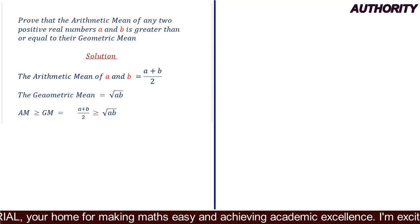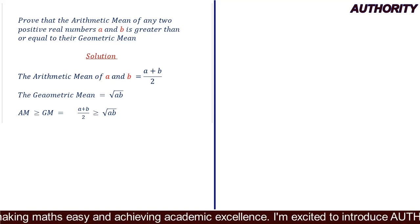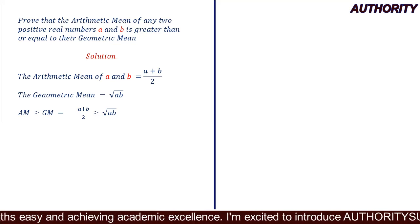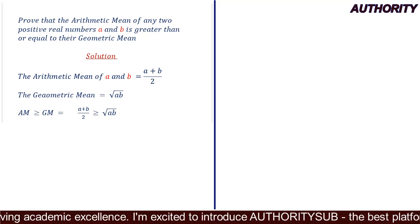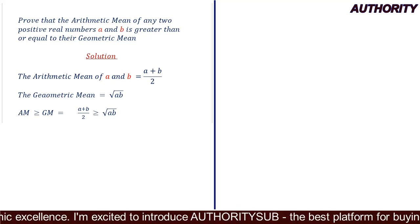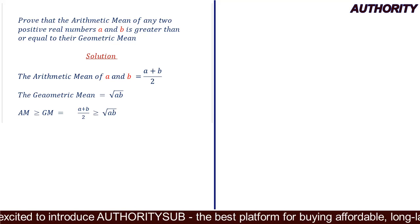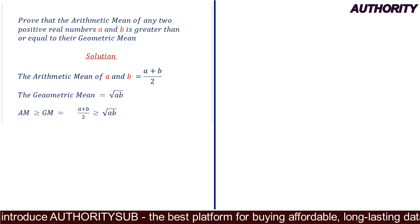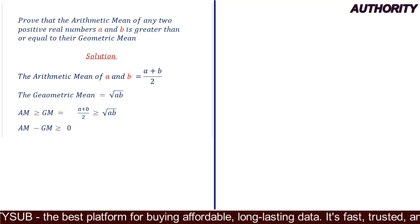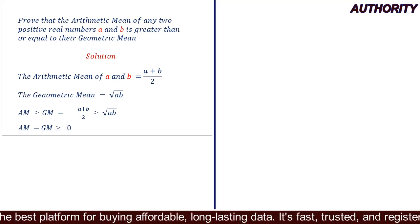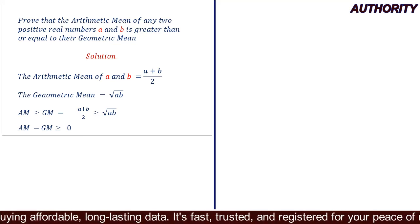We are going to show that AM minus GM is greater than or equal to zero. When you subtract the geometric mean from the arithmetic mean, something should remain and that remainder should be greater than or equal to zero — that automatically proves AM ≥ GM. Now let's prove it step by step. We have (a + b)/2 ≥ √(ab).